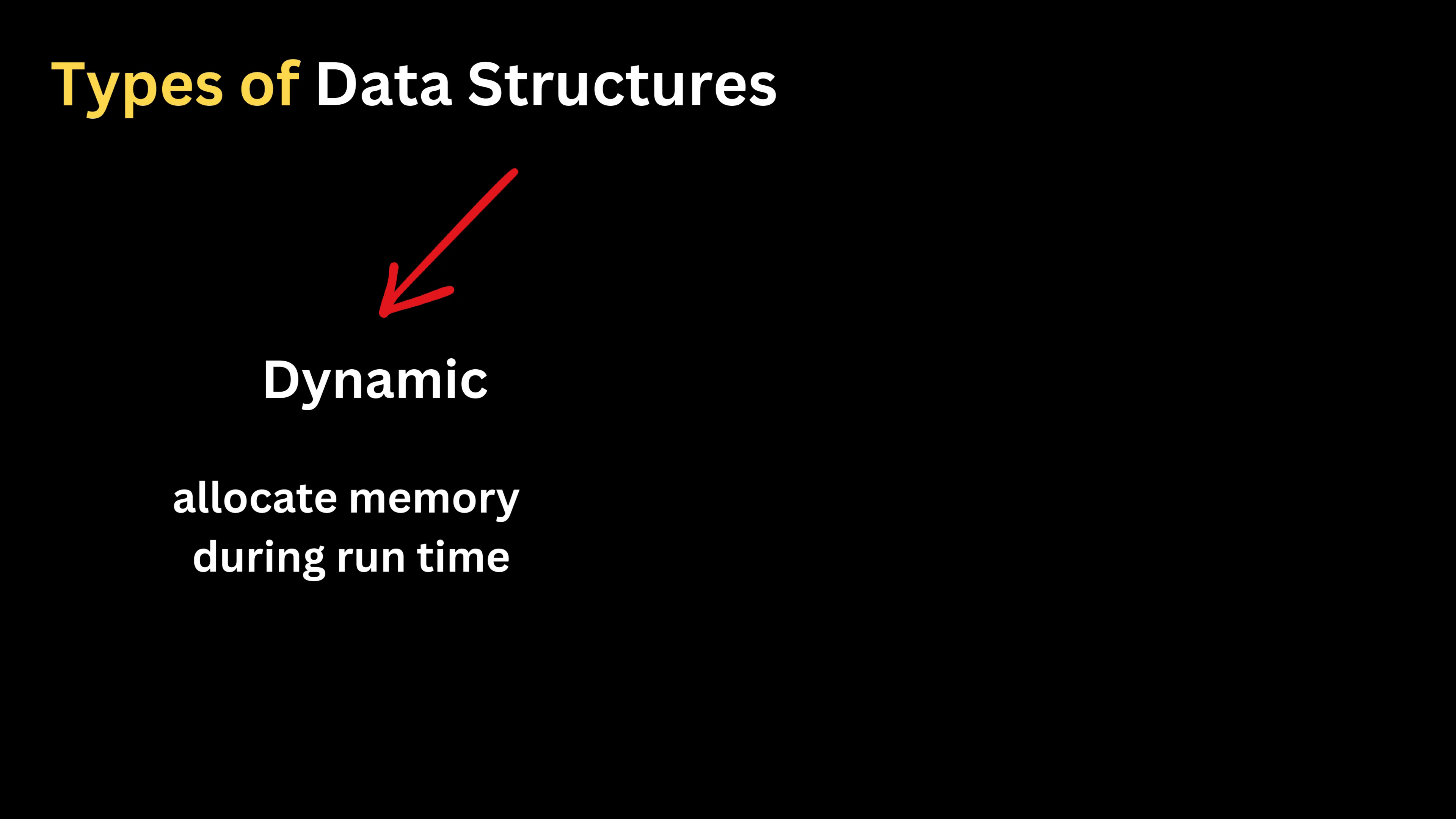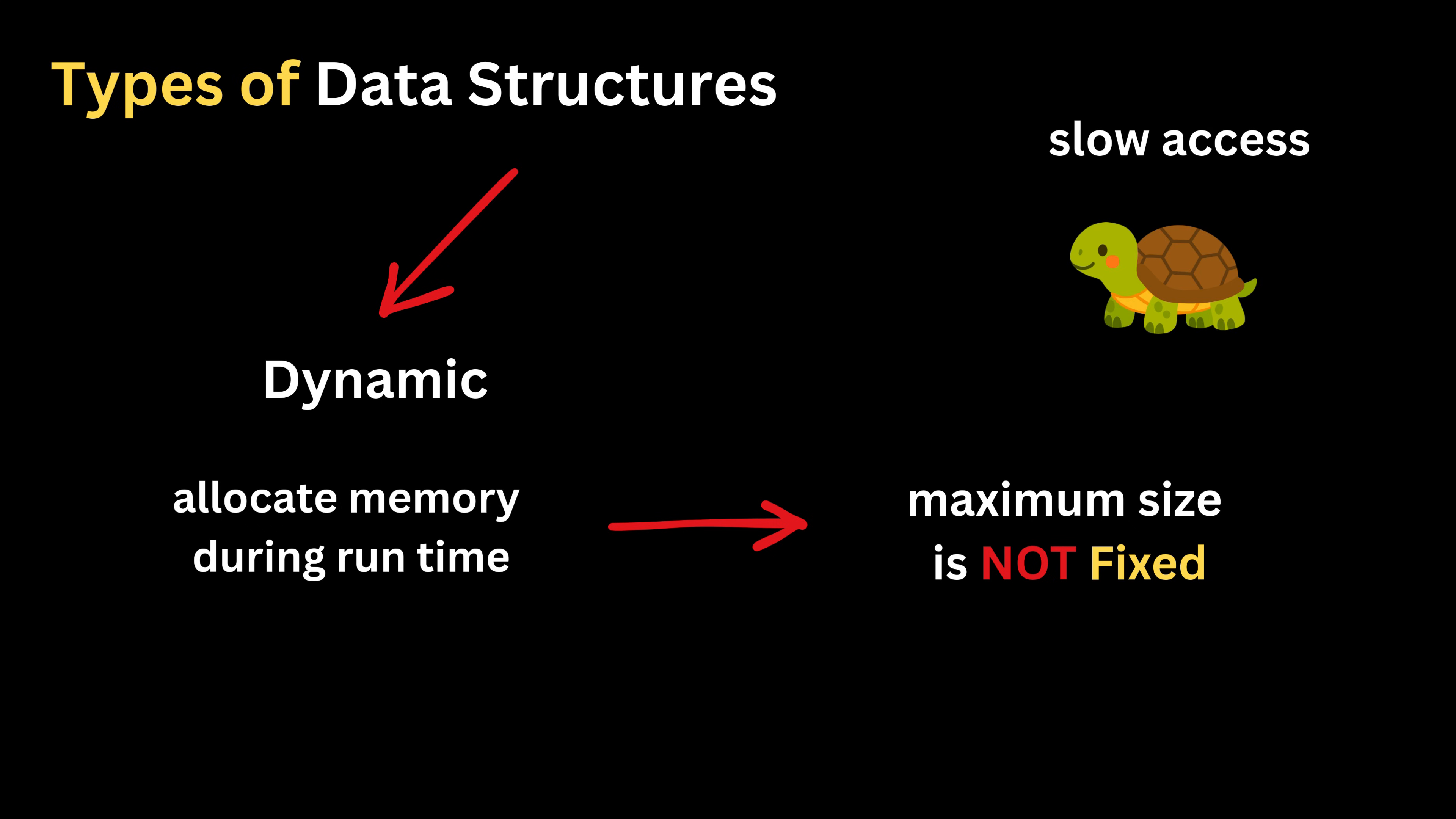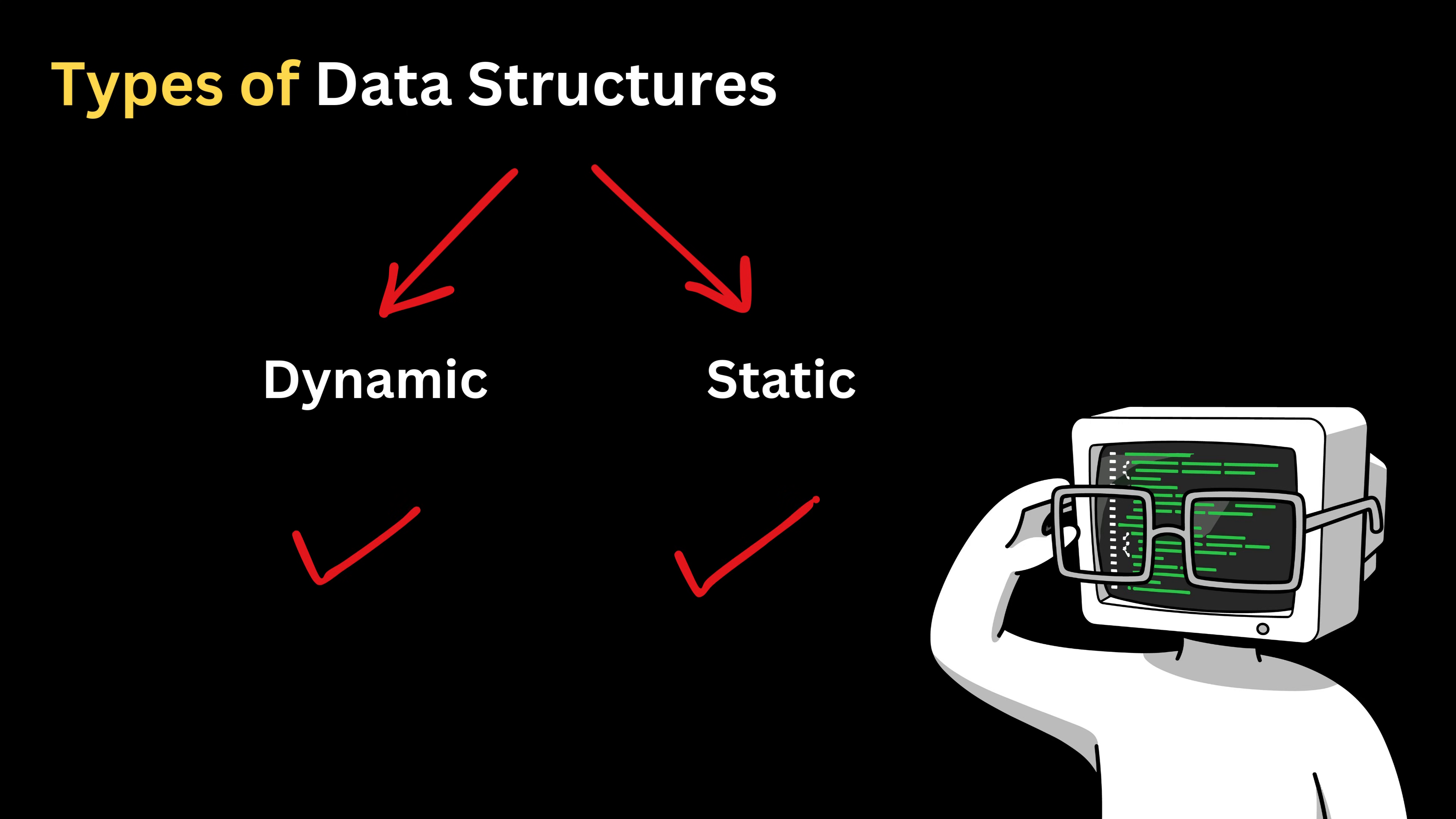Dynamic structures allocate memory during runtime, so their size can change based on the program's needs. This flexibility makes insertion and deletion quick and efficient, but accessing elements becomes comparatively slower because the data may not be stored in continuous memory. Linked lists are the most common example. Since both static and dynamic structures have opposite sets of strengths and weaknesses, no single type is universally better. The right choice depends on what the problem requires.